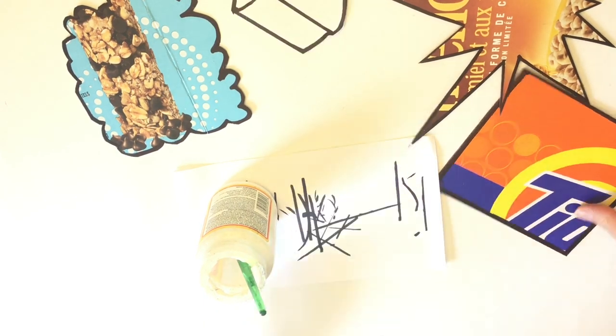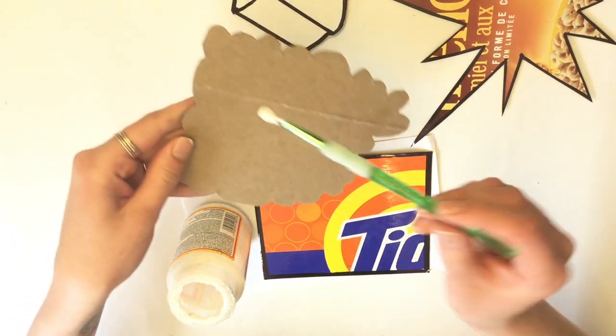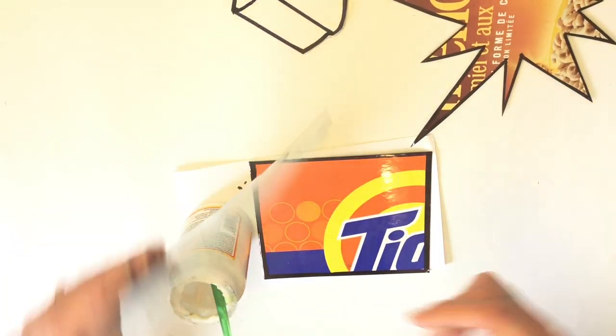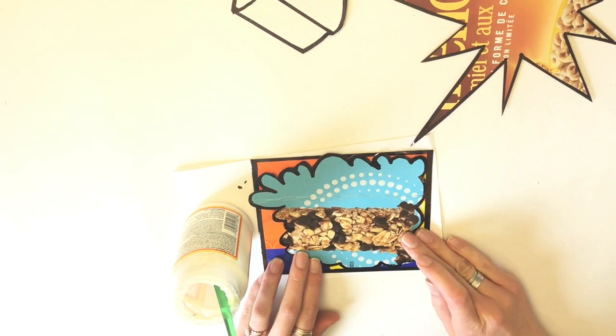Now, I just happen to have Mod Podge sitting around at my house, but maybe you don't, so here are some alternatives. You could use white school glue, stick glue, a glue gun, or even tape.